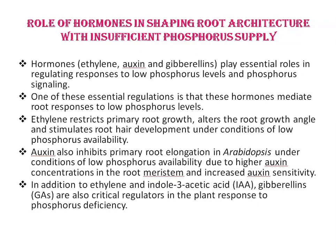Next is the role of hormones in shaping root architecture with insufficient phosphorous supply. Hormones like ethylene, auxin, and gibberellins play an essential role in regulating responses to low phosphorous levels and phosphorous signaling. These hormones mediate root responses to low phosphorous levels. Ethylene restricts primary root growth, alters the root growth angle, and stimulates root hair development under conditions of low phosphorous availability.